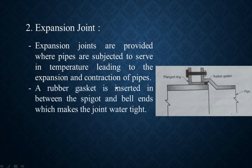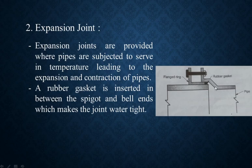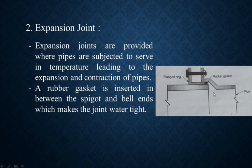A rubber gasket is inserted between the spigot and bell ends, which makes the joint water tight. The rubber gasket is fitted between the bell end and the spigot end so that if water is flowing, it will not leak out at the joint. This rubber gasket ensures the pipeline is water tight and water will not leak.